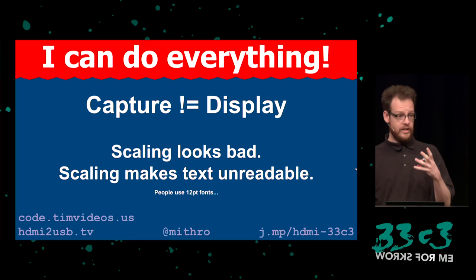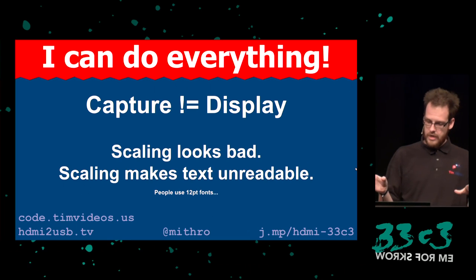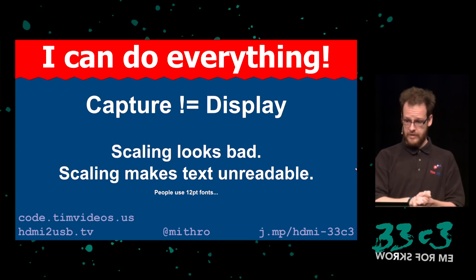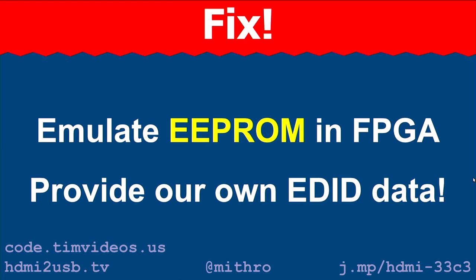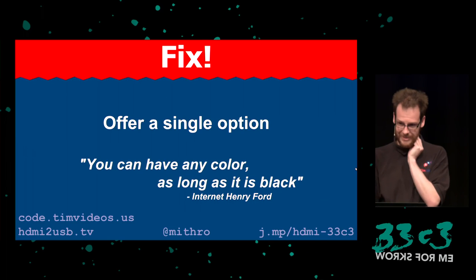I'm interested in capturing data, so I want it in a format that's convenient for me to capture. I don't want to have to zoom into images and text because it looks terrible — completely pixelated and makes text completely illegible. And presenters at technical conferences are known for using really small fonts. The way we solve this problem is by emulating our own EPROM in the FPGA and providing our own EDID interface, presenting only the resolution that should be used. That solves the problem of choosing the resolution — if there's only one option, it's hard to choose the wrong one.